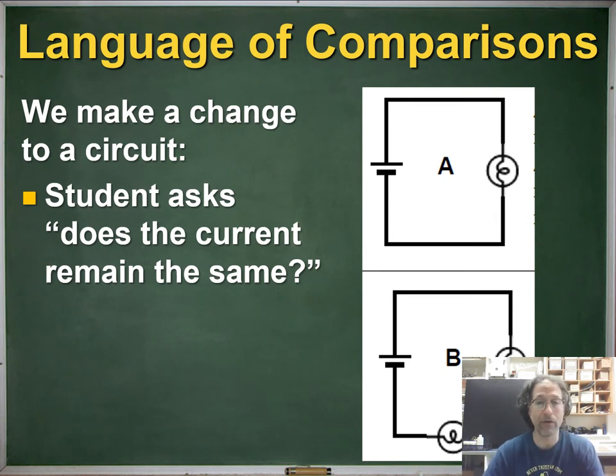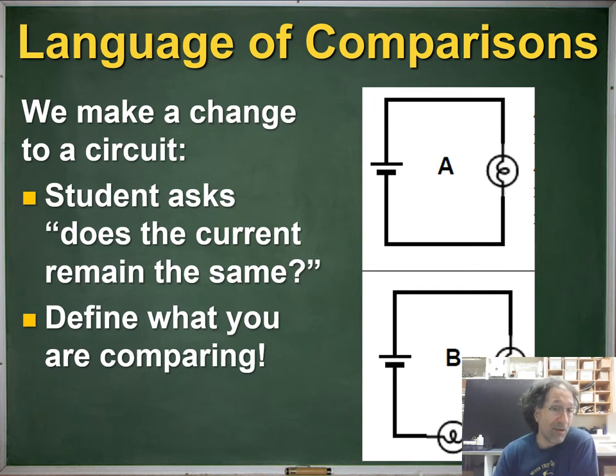We also need to be careful in our use of language when we're comparing things because it can become very confusing very quickly. So let's suppose we make a change to a circuit. You can see circuit A and circuit B in my diagrams. So students will ask the question does the current remain the same? And the answer is well it depends on what you're comparing. So we have to be really careful with our language. So be sure to define what you are comparing. So for example, if you're comparing the current going through the two batteries of these different circuits, are those currents the same? No. But if you're comparing the current going through the two bulbs of circuit B, are those currents the same? Yes. So we need to be very careful and precise.